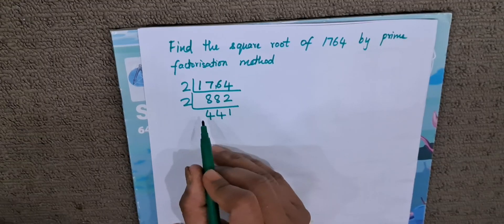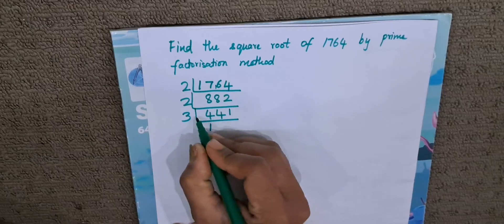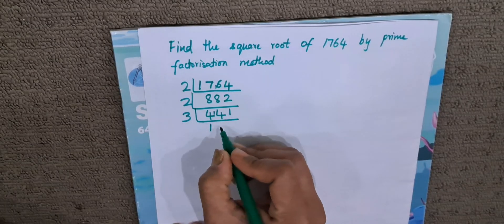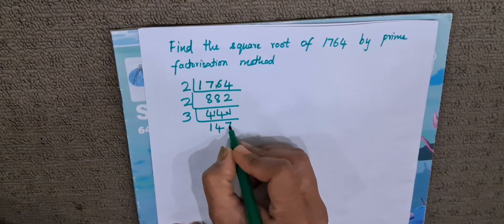So 9 is divisible by 3, so 441 will be divisible by 3. 3 1s are 3, 1 is the remainder. 3 4s are 12, 2 is the remainder. 3 7s are 21.